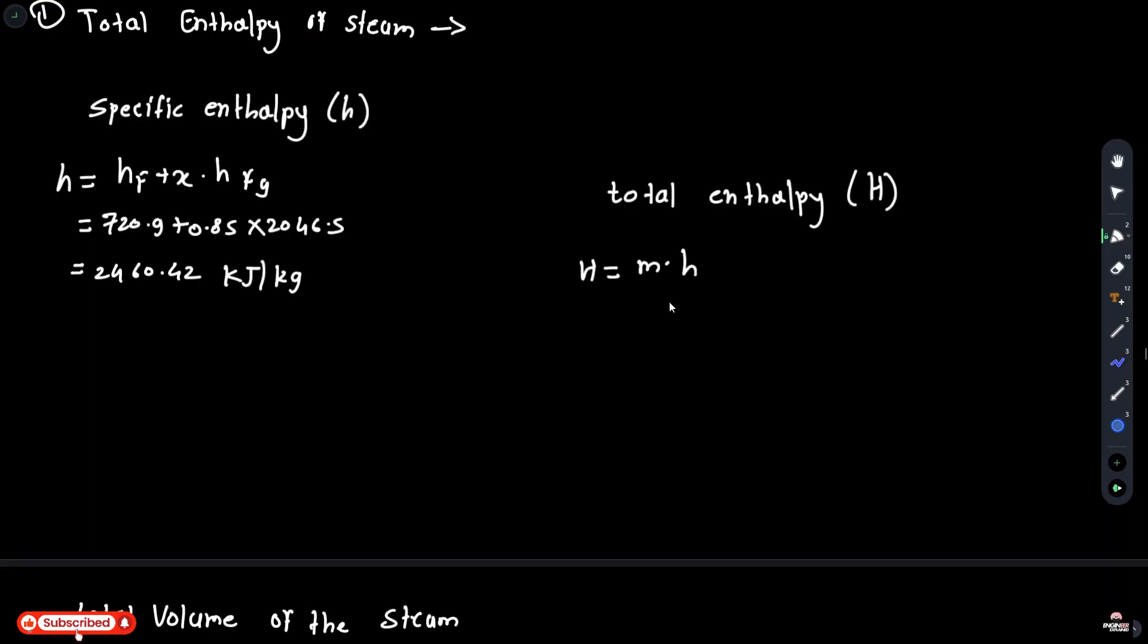And total enthalpy H is equal to mass multiplied by specific enthalpy. Mass is 2 multiplied by H is 2460.42. So total enthalpy is 4920.85 kJ.